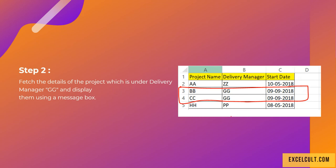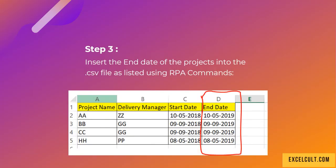Then as step two, fetch the details of the projects which are under the delivery manager 'Double Z' and display them using a message box. As you can see on the right-hand side, I have highlighted the projects that come under the Double Z manager, so try to display them in the message box.